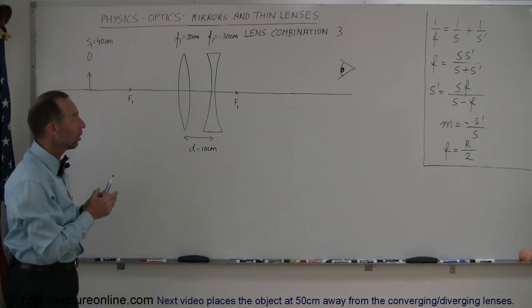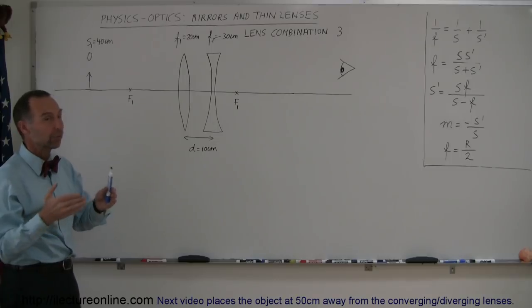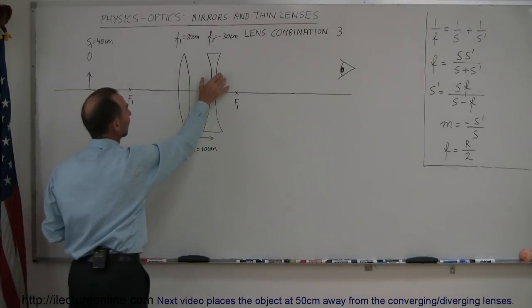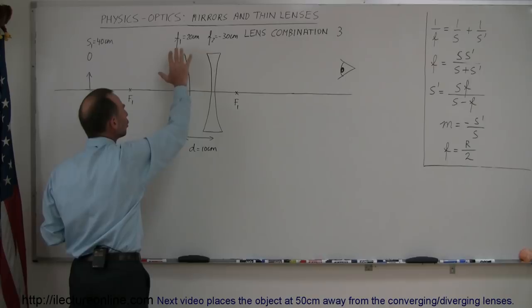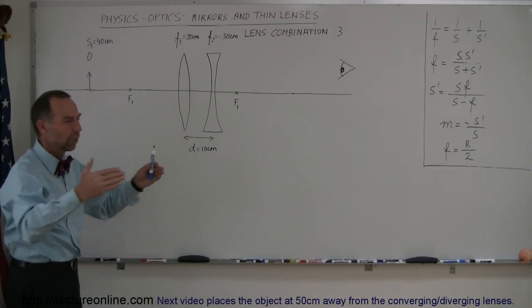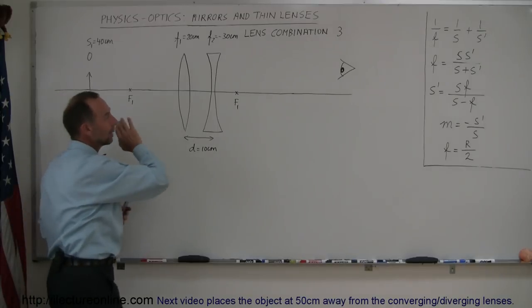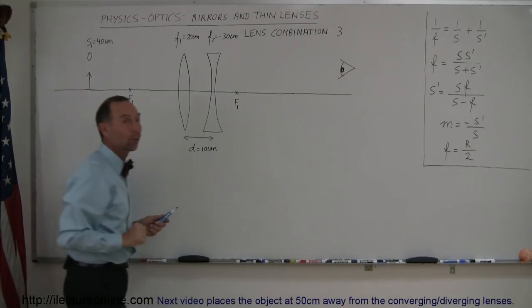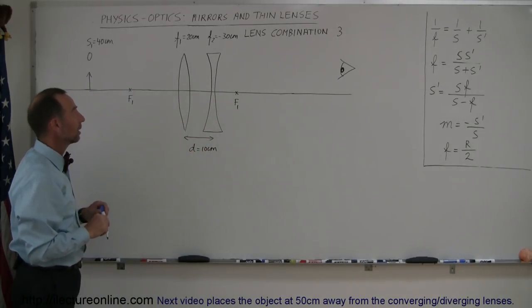So in this particular case it looks like the converging lens is stronger than the diverging lens, and so the end result is as a combination the two lenses will still act like a converging lens. But the second diverging lens will kind of dilute the strength of the first lens, which means that the rays will not converge as quickly and the image will probably be formed farther away. So let's see if we're correct on that one.